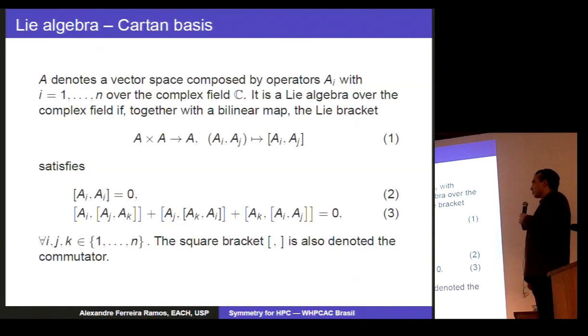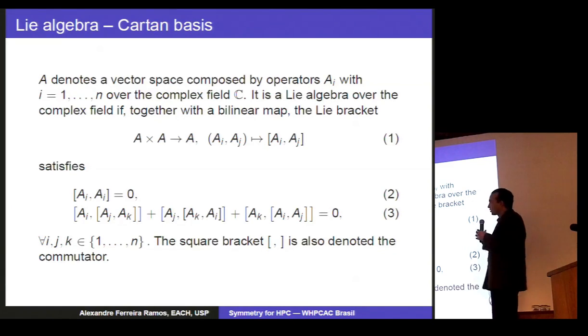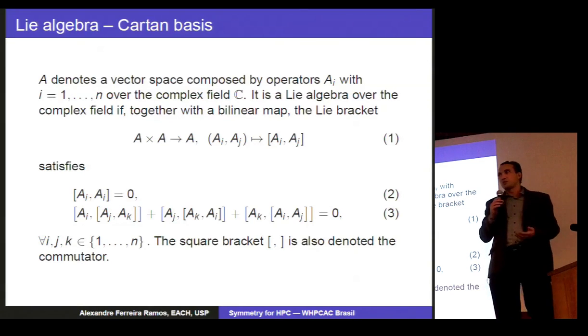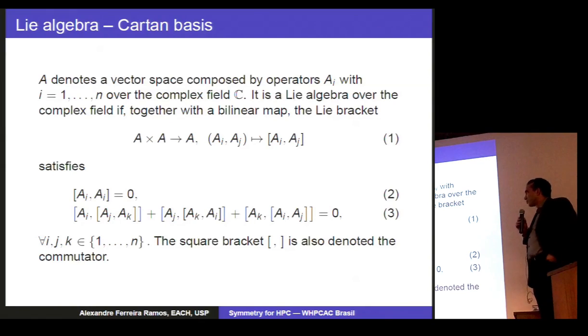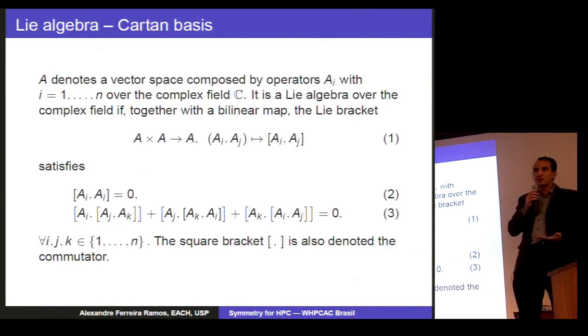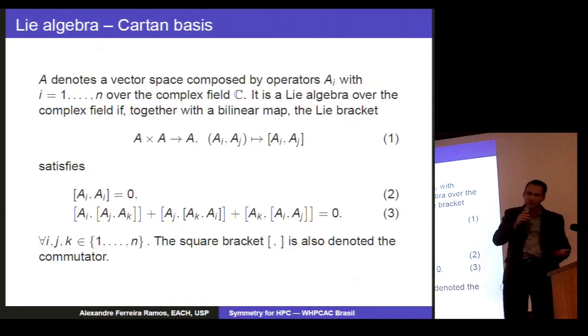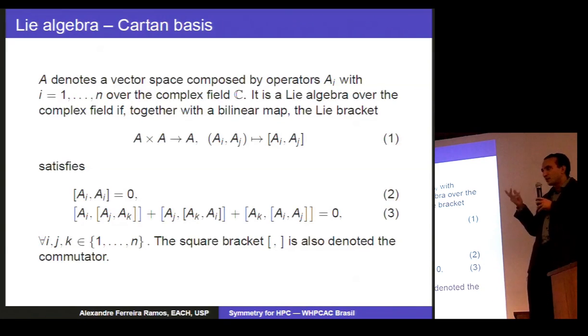To start, let's define the Lie algebra. We are going to define the Lie algebra as: we start with a vector space composed by operators. Those operators could be matrices. The entries of the matrices are real numbers or complex numbers. And these matrices, you can define a product between the matrices. Once you have the product between two matrices of your vector space, you get another element of your vector space. If you get the product between the same element, it must be zero. And there is this identity that is named the Jacobi identity, that if you take three different elements and you change their positions in the product and sum up, it's going to be zero.